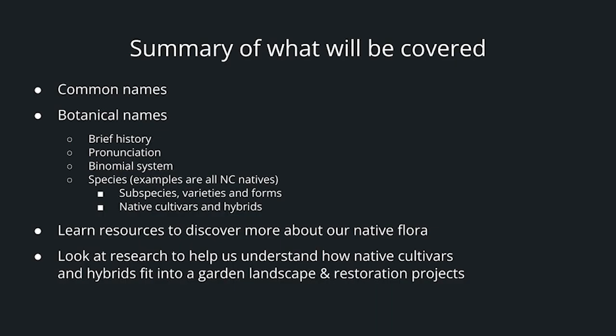Here's a summary of what we'll be covering tonight. We'll discuss common names, botanical names, and a brief history of them, pronunciation, and the binomial system. Species — all the examples are going to be North Carolina natives. We'll talk about subspecies, varieties, and forms, and then native cultivars and hybrids. We'll also learn resources to discover more about our native flora, and look at research to help us understand how native cultivars and hybrids fit into a garden landscape and restoration projects.